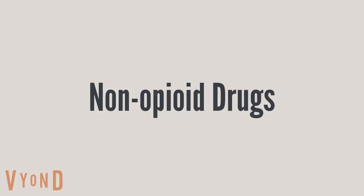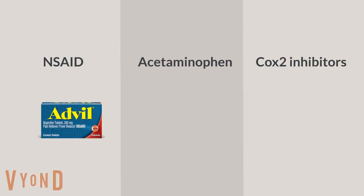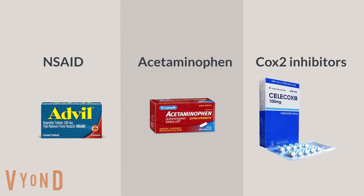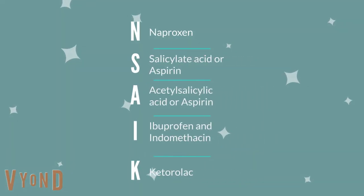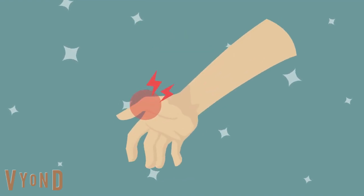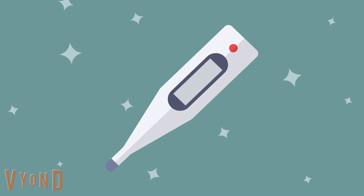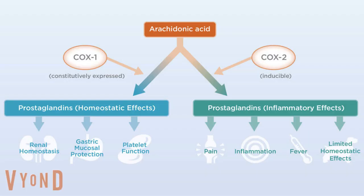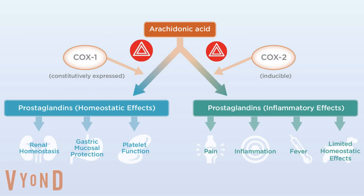Now let's talk about non-opioid drugs, like non-steroidal anti-inflammatory drugs (NSAIDs), acetaminophen, and COX-2 inhibitors. NSAIDs include naproxen, acetylsalicylic acid or aspirin, ibuprofen or indomethacin, and ketorolac. They all have an anti-inflammatory and antipyretic effect. They work by inhibiting cyclooxygenase 1 and 2, or COX-1 and COX-2 enzymes, which decreases the production of prostaglandins.